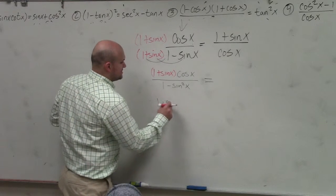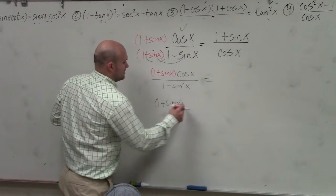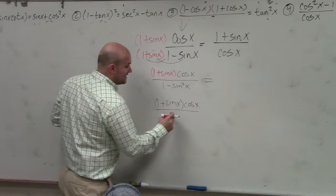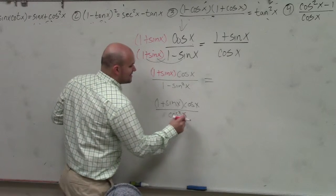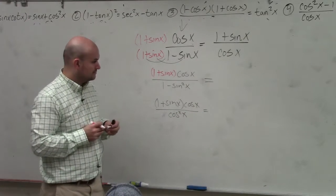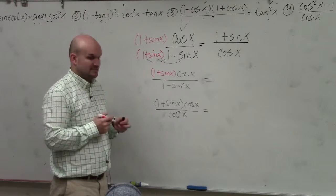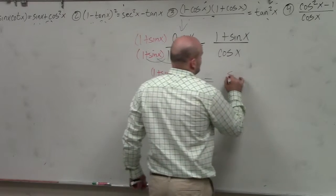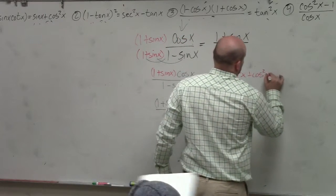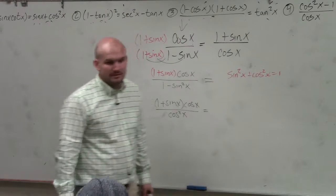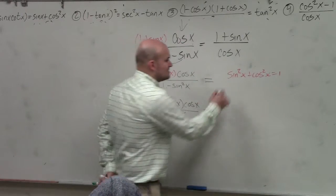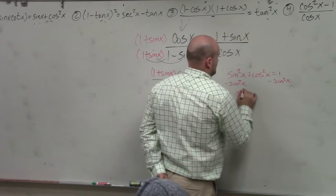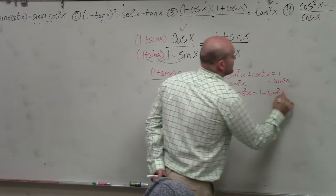Therefore, I have 1 plus sine of x times cosine of x. This, using my Pythagorean identities, is cosine squared of x. So 1 minus sine squared of x is cosine squared. Do you have your Pythagorean identities out?